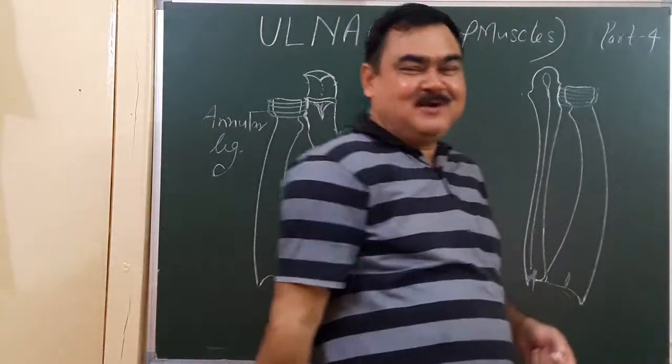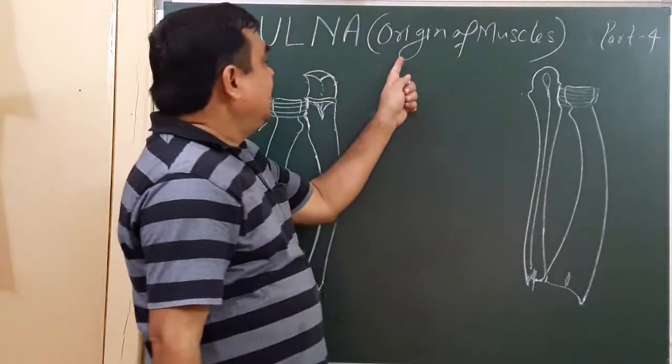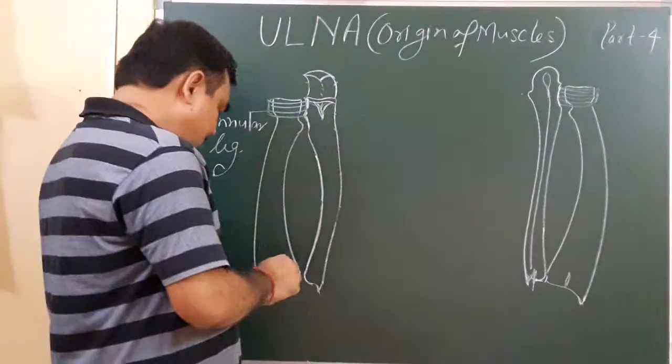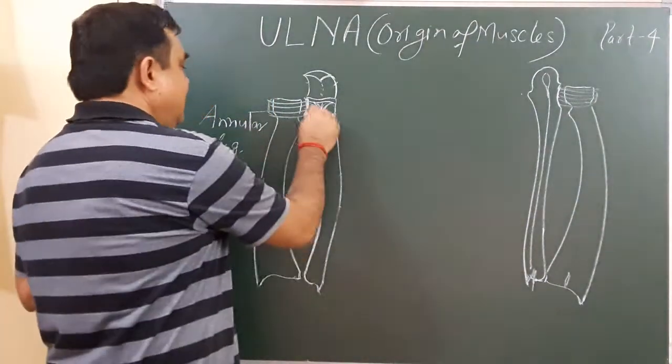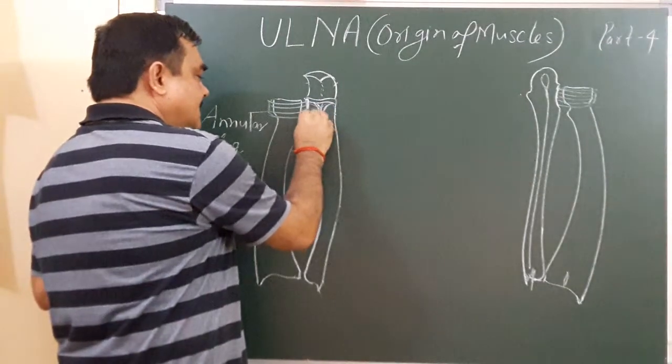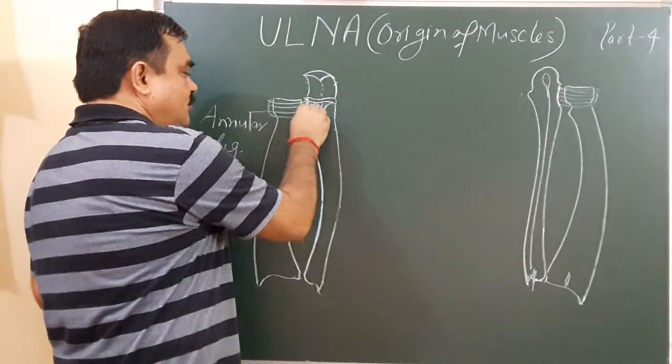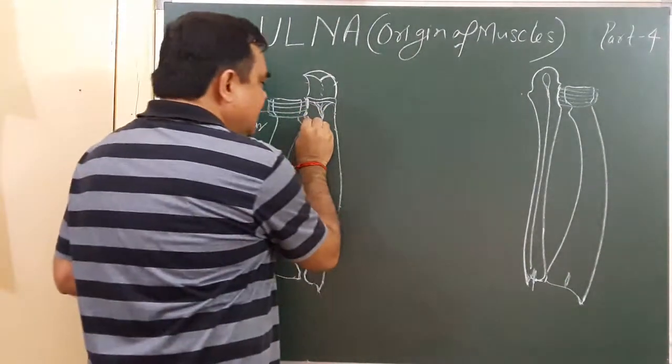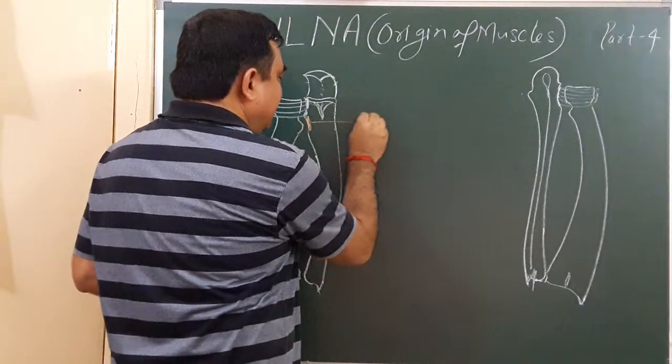Now we discuss the muscles that take origin from the ulna. Here is one muscle. Here is the supinator crest, and the anterior triangular area to the supinator crest, where the supinator muscle arises.